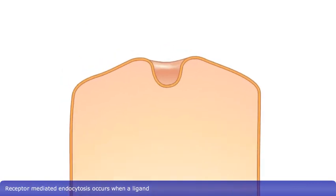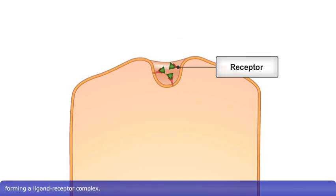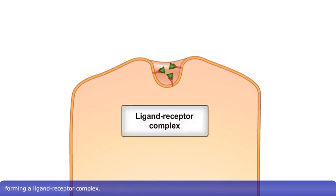Receptor-mediated endocytosis occurs when a ligand binds to a specific receptor on the cell's plasma membrane, forming a ligand-receptor complex.